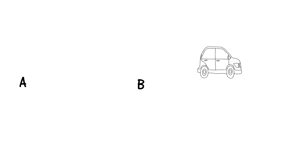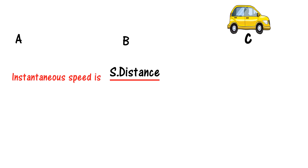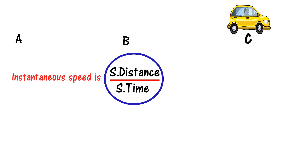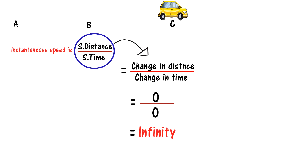Let a car move from point A to point B and then to point C. Instantaneous speed is defined as a very small change in distance divided by a very small change in time. To take a very small change in distance and a very small change in time, we let the time approach zero — giving 0 divided by 0, which goes to infinity.